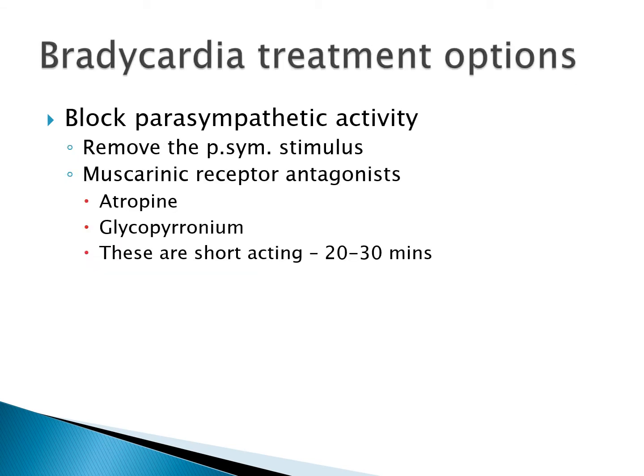When treating bradycardia, the first thing we can do is block parasympathetic activity. This might mean removing parasympathetic stimulation — the vagus innervates most abdominal organs, so dilatation of the stomach can cause reflex bradycardia. Placing an NG tube and decompressing the stomach can be enough. We can also use muscarinic receptor antagonists such as atropine and glycopyrrolate, which are short-acting drugs that induce temporary blockade at the muscarinic receptor, allowing heart rate to rise.